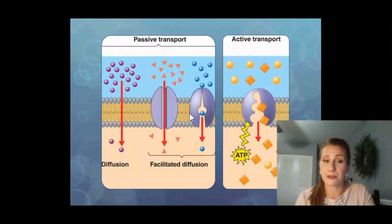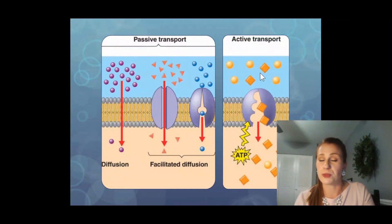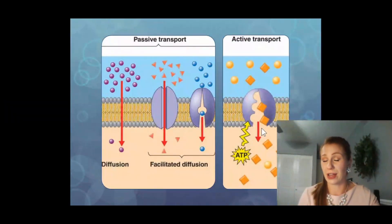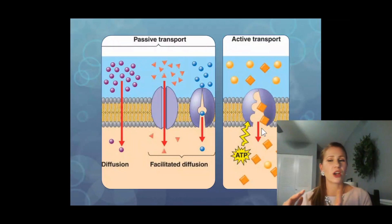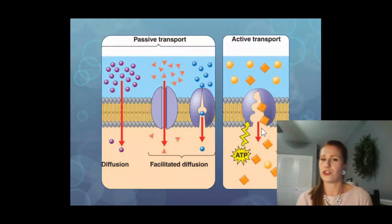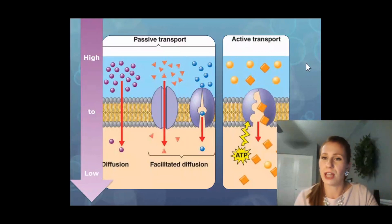To compare to passive transport: diffusion is high to low concentration with no ATP, and facilitated diffusion is also high to low concentration with no ATP. Active transport — as with our sodium-potassium pump — requires ATP and moves molecules from low concentration to high concentration. Active transport is like going up a hill: you go from the low side to the high side and need energy to get there. Passive is high to low; active transport is low to high.